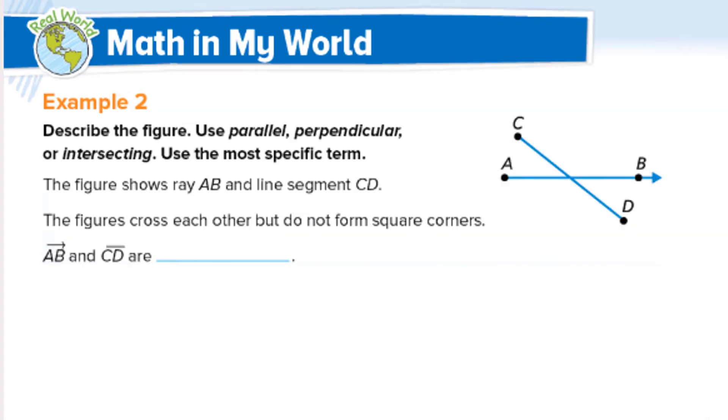In example two, describe the figure using parallel, perpendicular, or intersecting. So let's take a look at CD line segment. And how is it, what is it doing compared to ray AB? Can you tell? It is intersecting, isn't it?